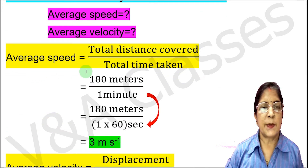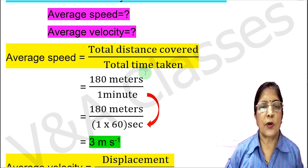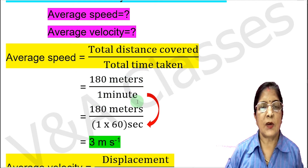We write the average speed formula: average speed equals total distance covered divided by total time taken. Total distance covered is 180 meters and total time is 1 minute. We will convert this minute to seconds by multiplying 1 by 60.